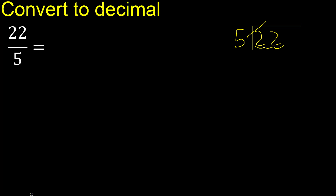5 multiplied by 5 is 25 — 25 is greater. 5 multiplied by 4 is 20 — 20 is not greater. 22 minus 20 is 2.